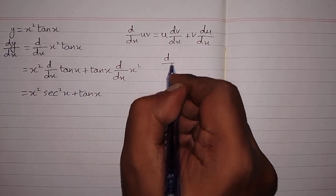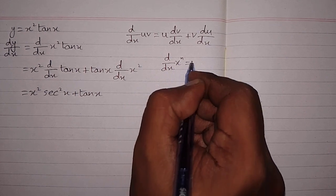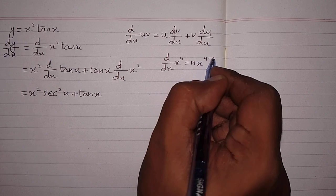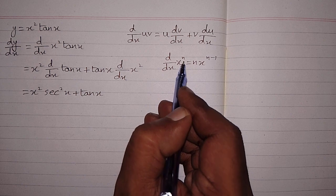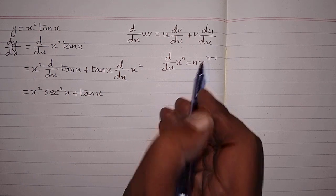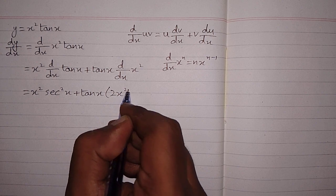The power rule is d/dx of x to the power n equals n times x to the power n minus 1. So we have 2 in place of n, so we will write 2, then x to the power 2 minus 1.